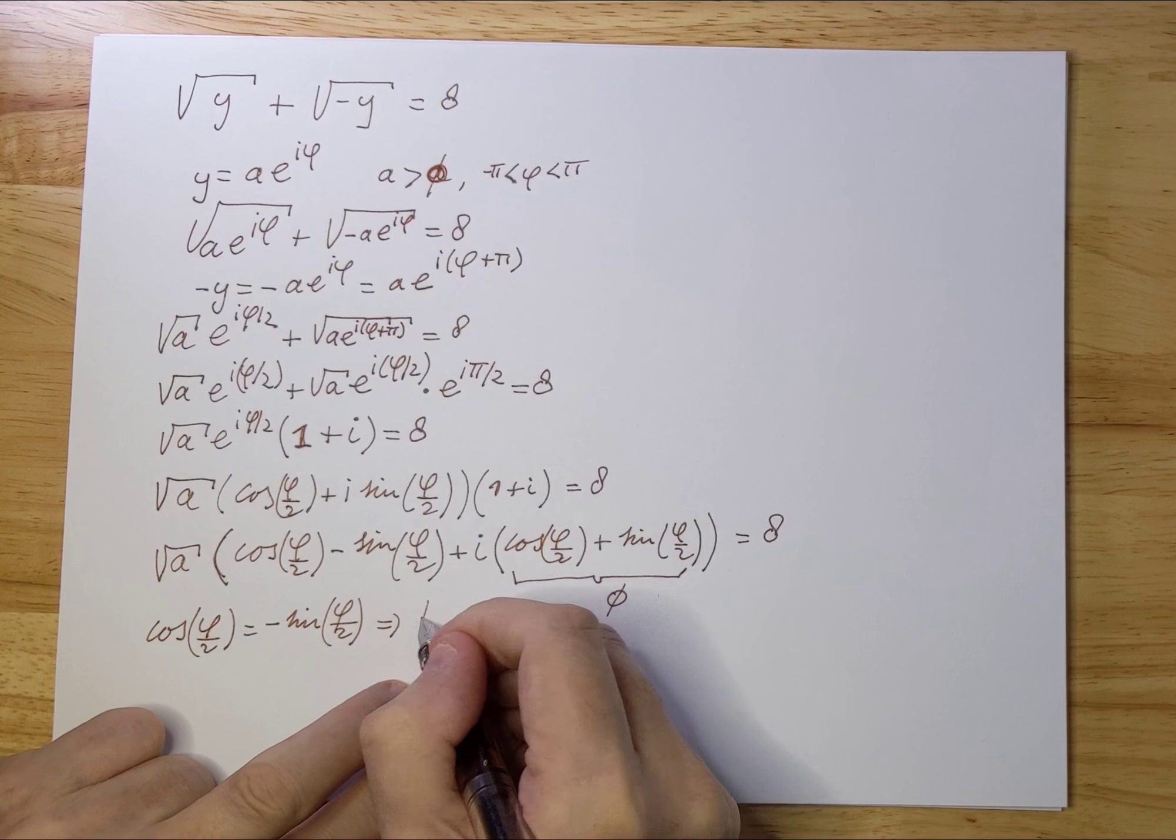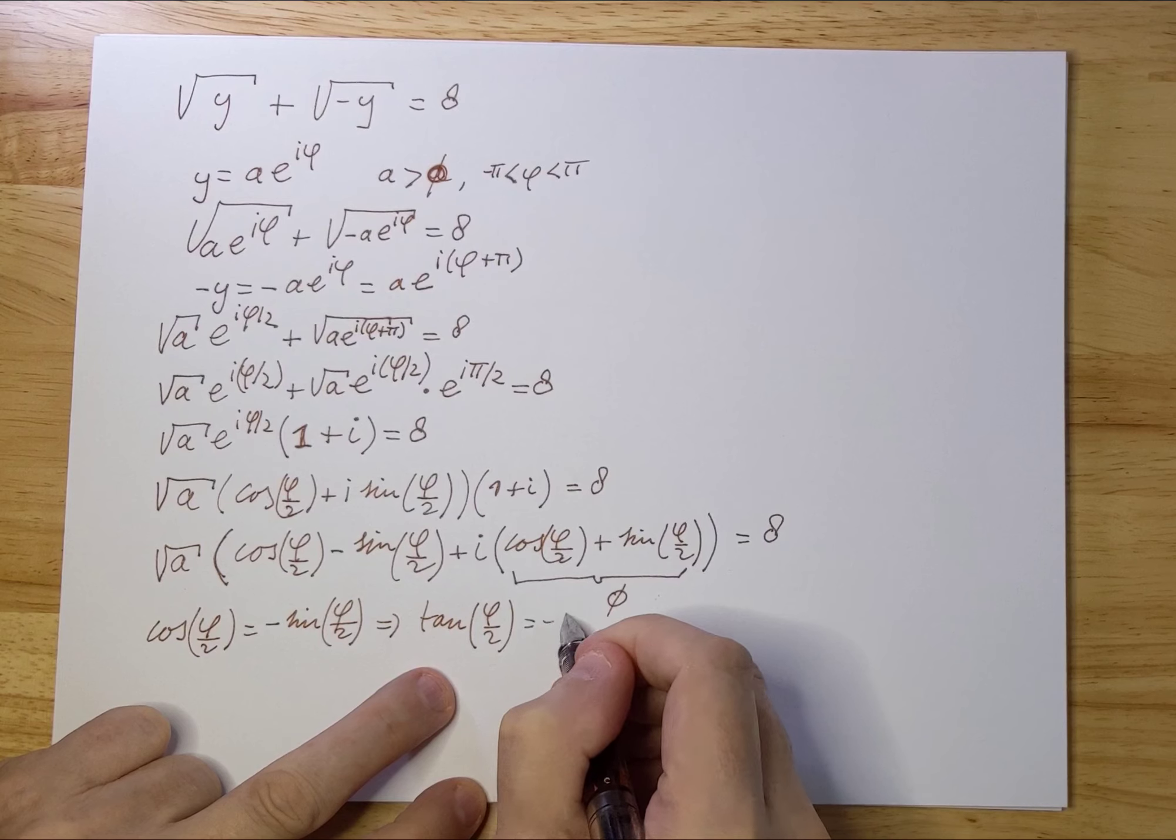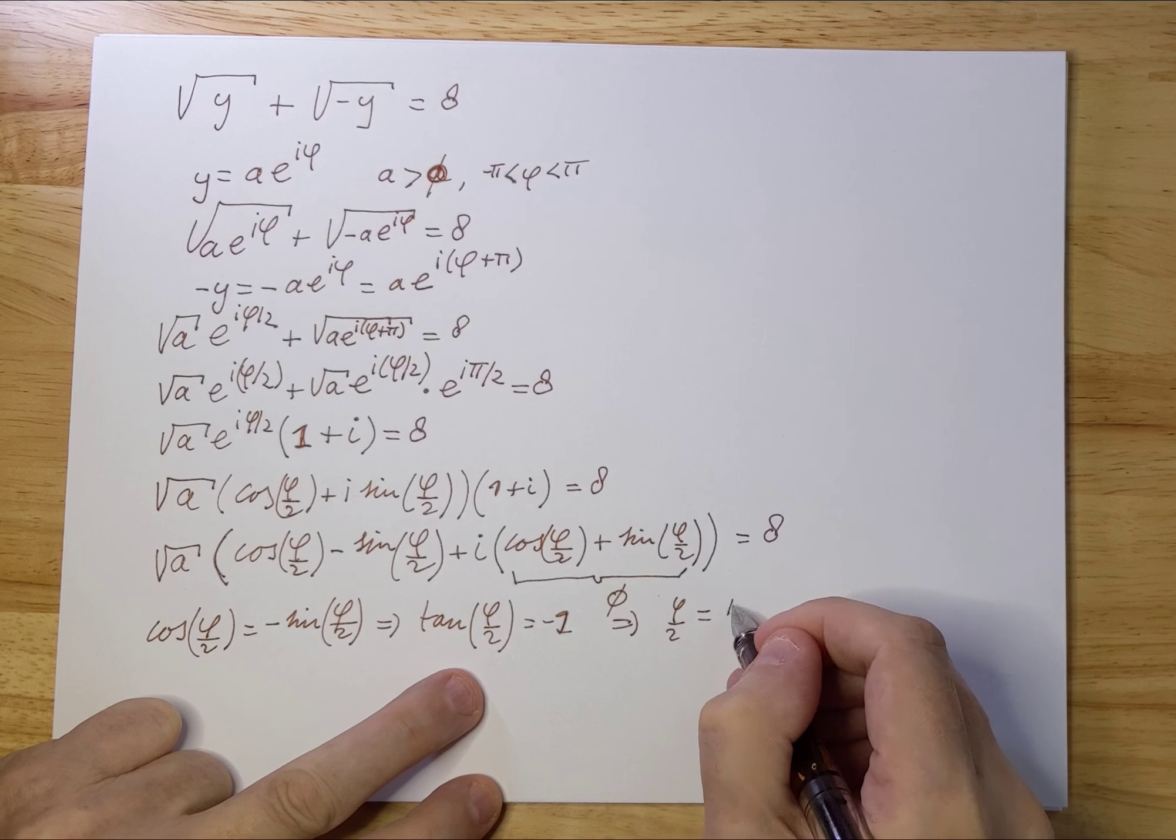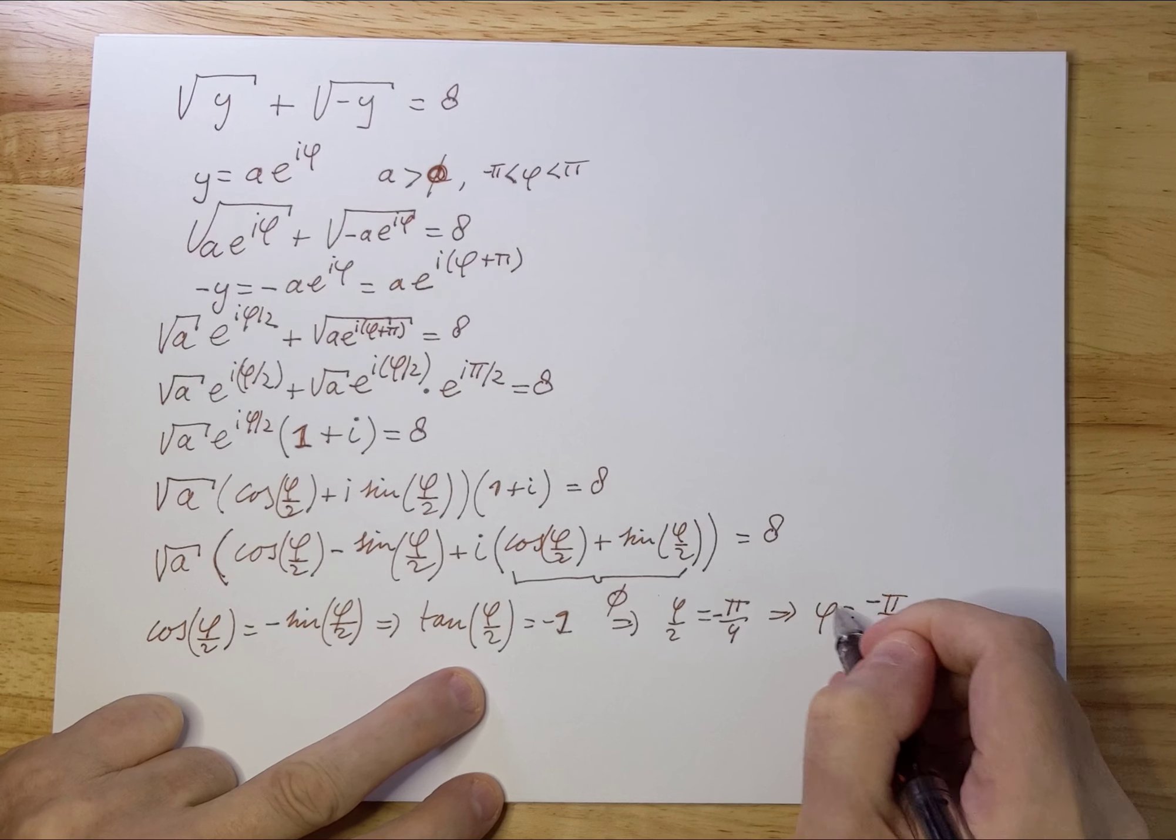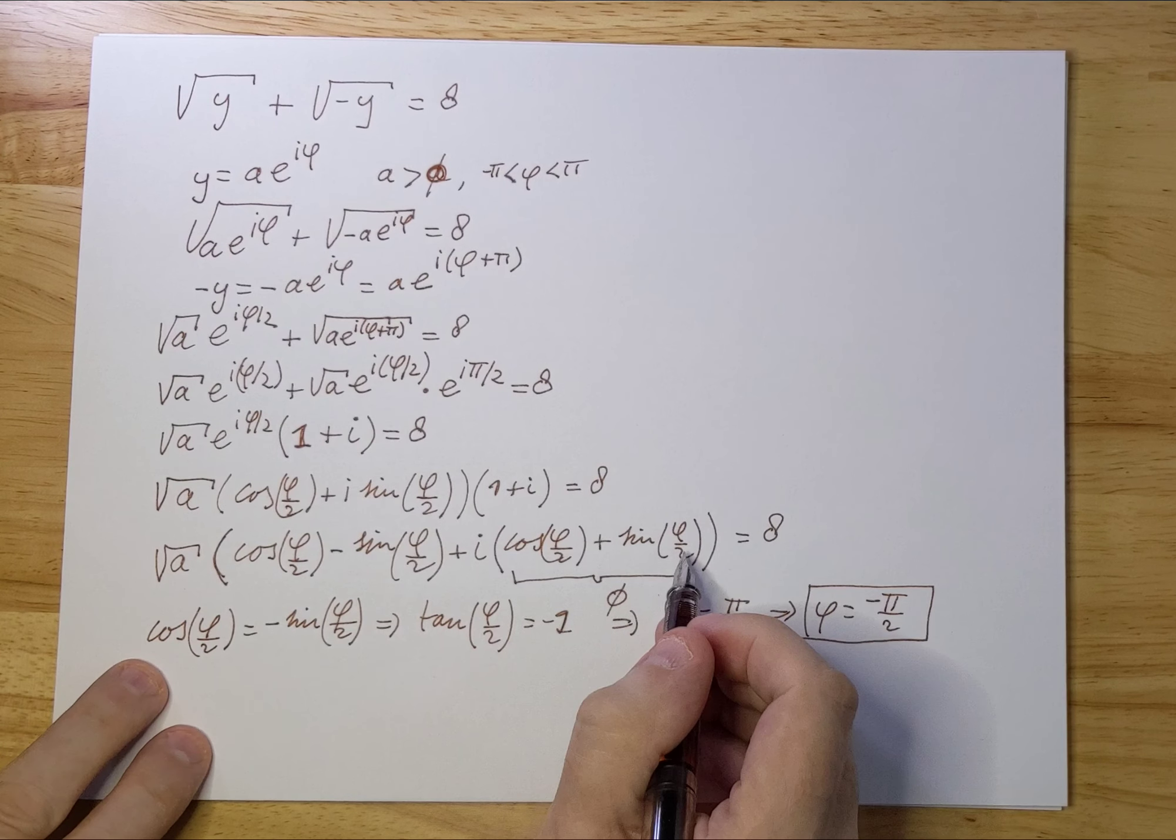That tells us that tan(φ/2) = -1, which means φ/2 = -π/4, and therefore φ = -π/2. So if φ = -π/2, the imaginary part is 0.